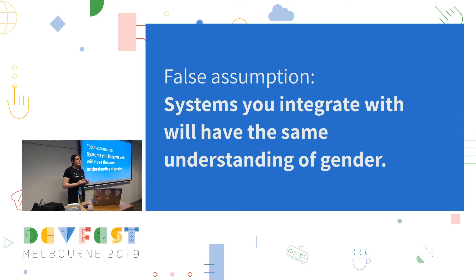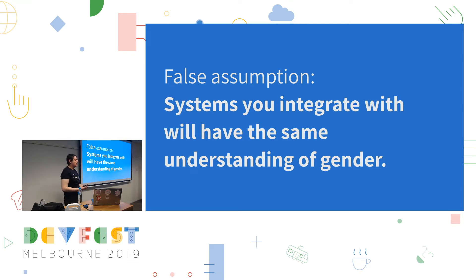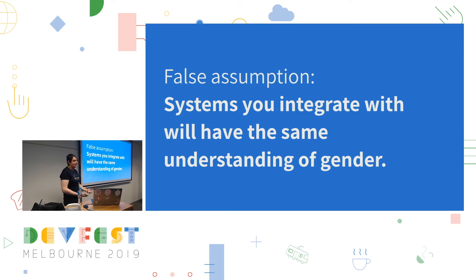So the false assumption there was that systems you integrate with will have the same understanding of gender — and in this case, the same understanding of titles. This shows something really important: with any integration you make between systems, you need to be prepared to encounter different sources of truth, especially around any topic as complicated and fluctuating as identity. And so they fixed my BPAY, everything worked, everything was fine.